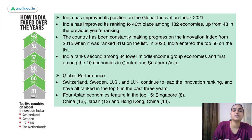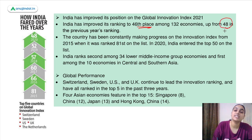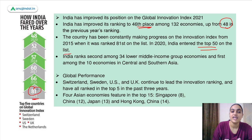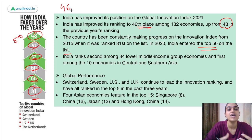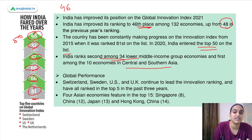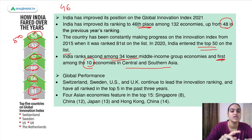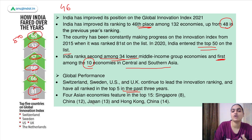Regarding India's position: India ranked 46 in 2021, up from 48 last year. Starting from 2015 when India ranked 81, it improved to 66 in 2016, then 60, 57, 52, 48 last year, and now 46. India ranks second among 34 lower-middle-income economies, and first among the 10 economies of Central and Southern Asia. Globally, Switzerland, Sweden, the US, and UK rank among the top five for the past three years. Asian economies like Singapore, China, Japan, and Hong Kong feature in the top 15.